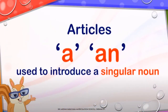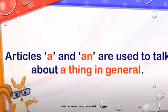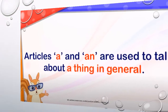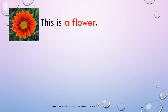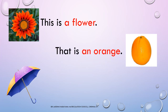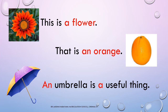Article 'AN' is used to introduce a singular noun. Articles 'A' and 'AN' are used to talk about a thing in general. For example: this is a flower, this is an orange, and an umbrella is a useful thing.